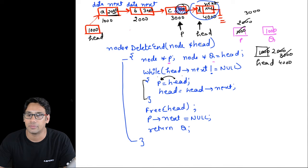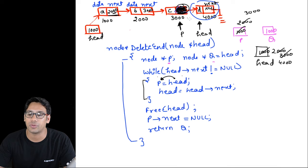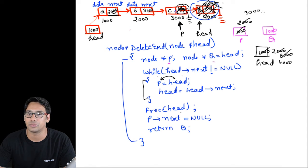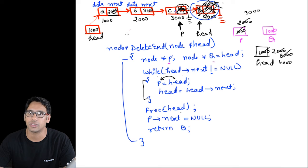Now you understand why we needed p — after freeing the memory pointed to by head, we need to set that previous node's next part to null. So we free head (the last node at 4000 is deleted), then set p->next = null. Finally, we return q, which stores 1000 — the address of the front node of the linked list. This is how you delete the last node from a linked list.